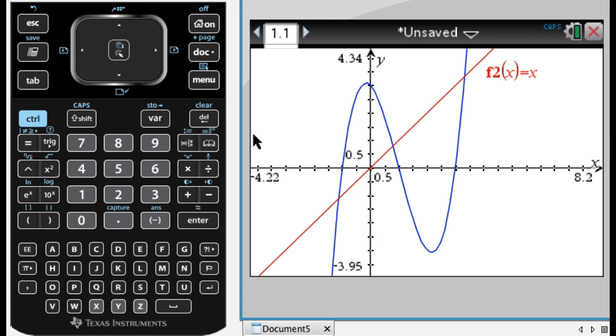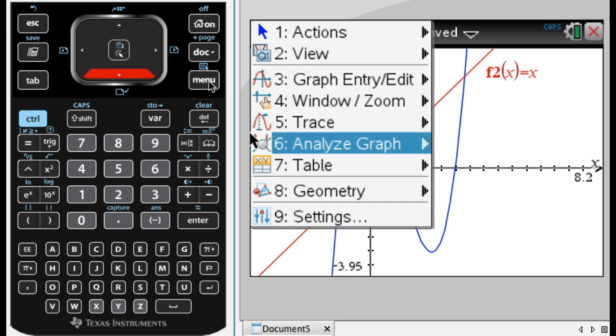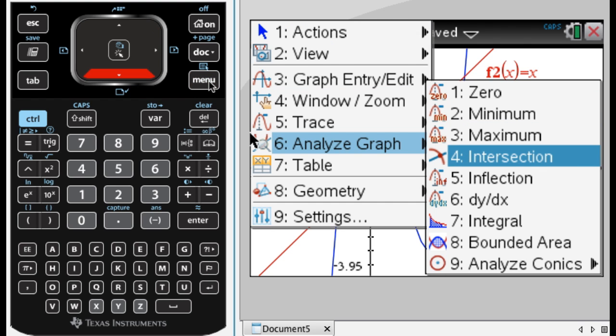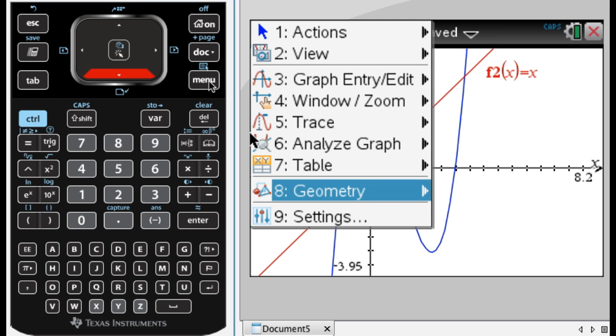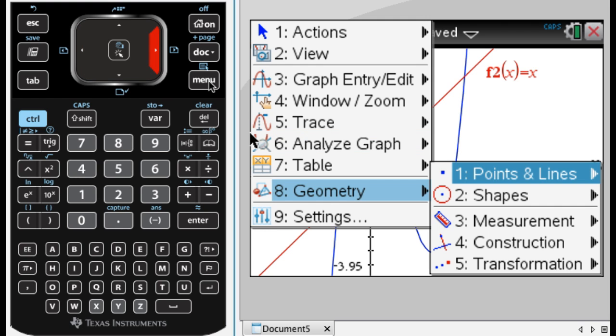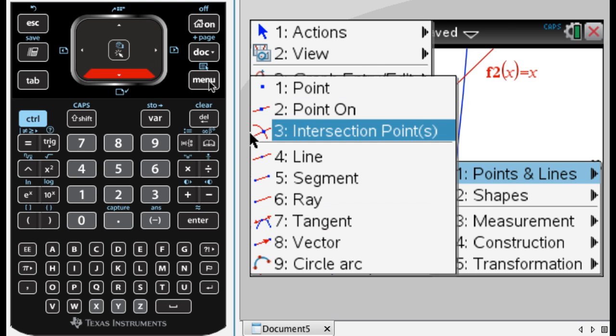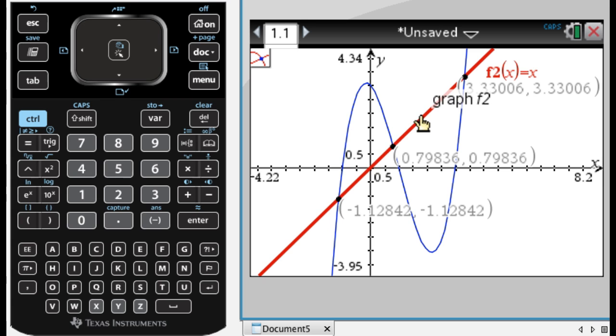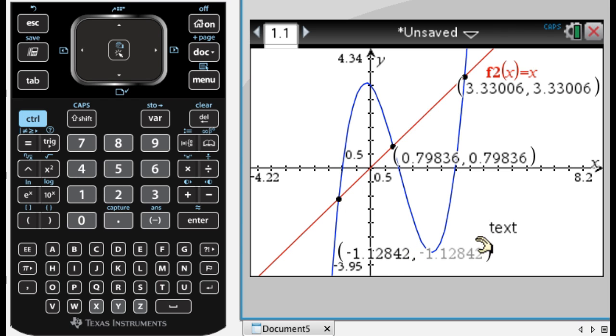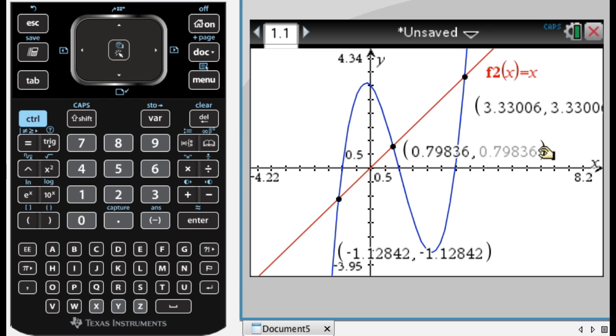The first thing I need to do is find the intersection points. There are two ways to do that. You can analyze the graph intersection, but it gives you one at a time which is annoying. A better option is to go to menu, then 8 for geometry, then 1 for points and lines, then 3 for intersection points. What that does is you pick two curves and it finds the intersections that are on the screen at the time you do it.